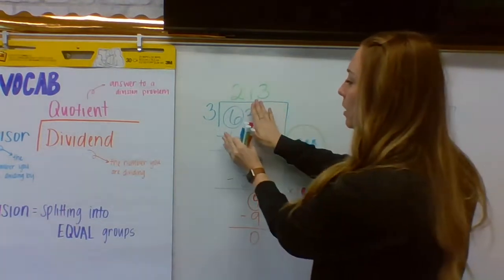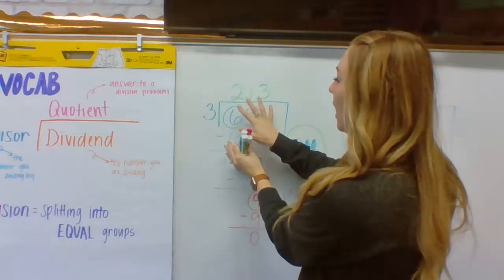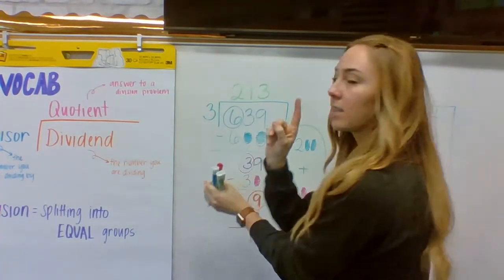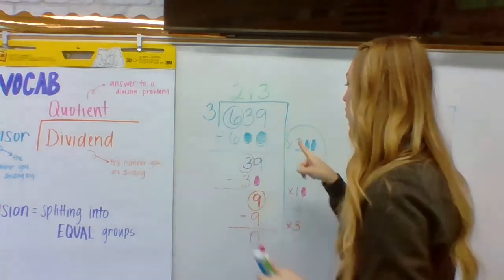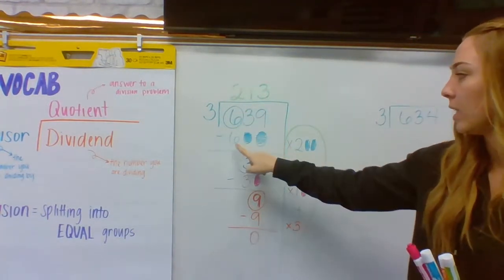You focus on one digit at a time. In this case, the first one being a number six. I can think to myself, how many threes fit in six? Three, six. Two groups of three. Three times two is six.